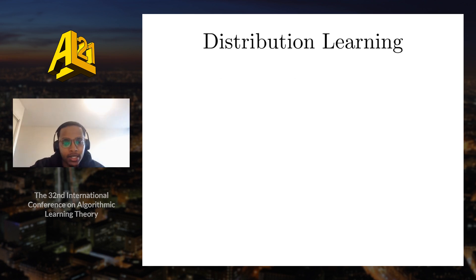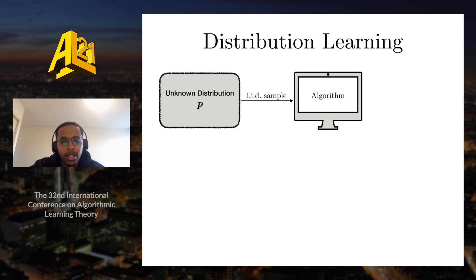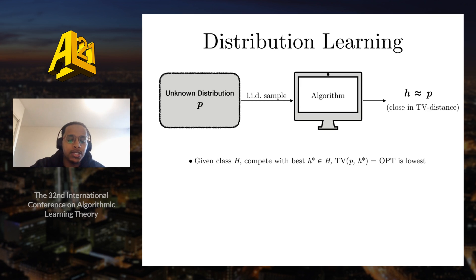The distribution learning setting we consider is as follows. We have an unknown distribution P, we have IID sample access from this distribution, and we use these samples as inputs to some algorithm. Our goal is for this algorithm to output some distribution H that is close to P in total variation distance with high probability, say 9 over 10. For a given class of distributions H, we want our algorithm to output some H that competes with the best H-star in this class — the distribution closest to P. We call this distance between P and H-star OPT.